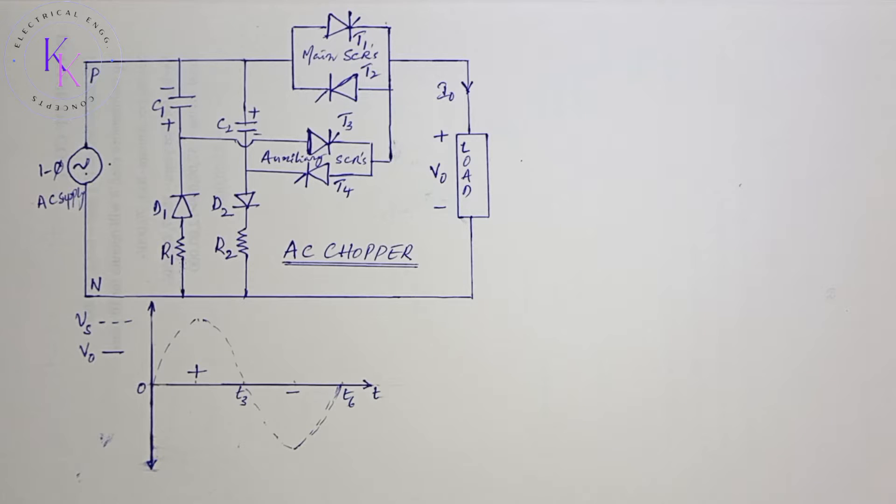An AC chopper is a device used to vary the magnitude of AC voltage. Usually we use transformers to step down and step up voltage magnitude, but we can vary the magnitude of voltage by using an AC chopper.